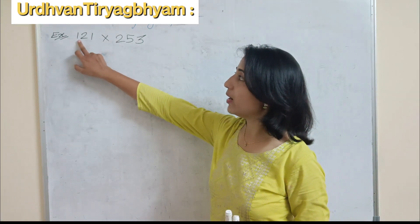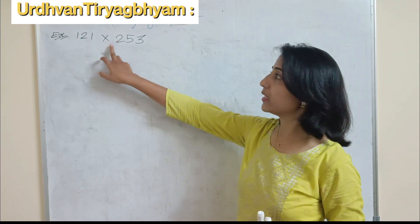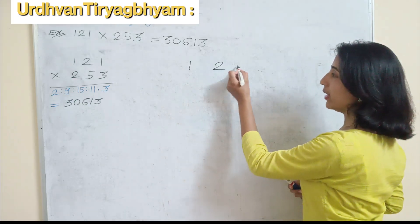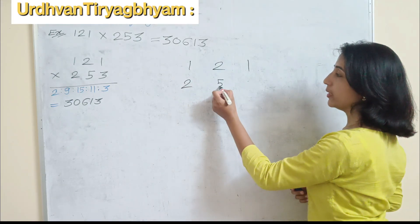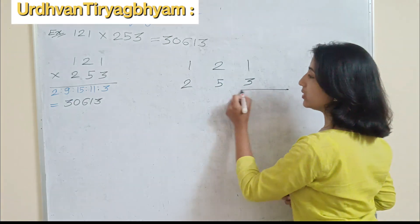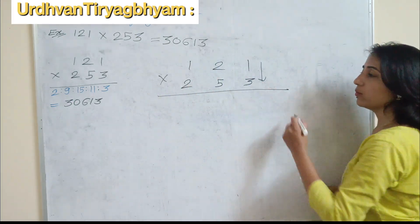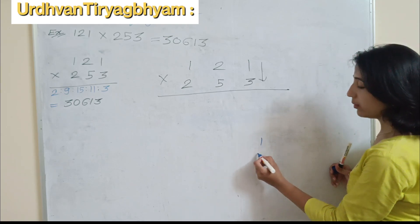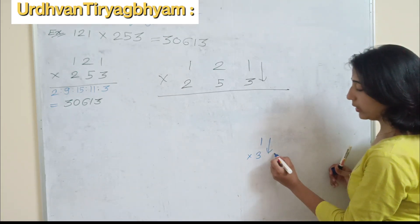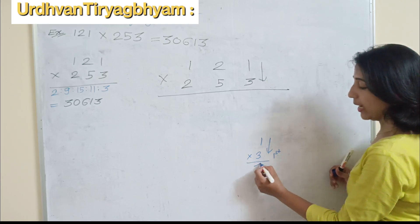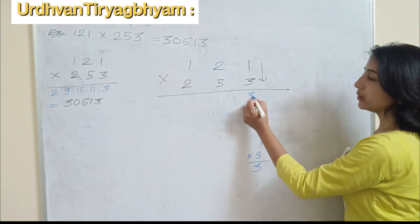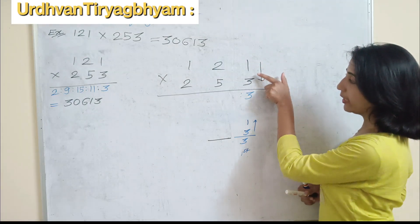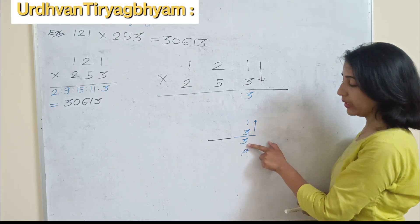So here I have taken one example: find the product of 121 multiplied by 253. Our numbers are 121 and 253. First step — we have to take the vertical product. The vertical product is 1 into 3. So the first step is 1 multiplied by 3, and it gives the answer 3. So here I am writing 3. The first pair is 1 and 3, whose product is 3.